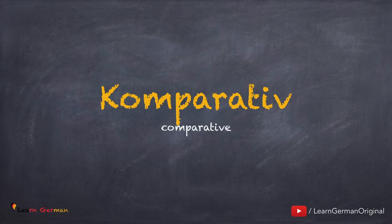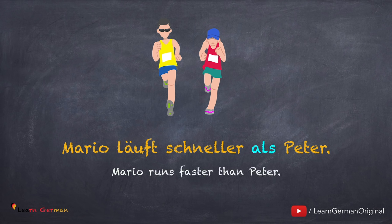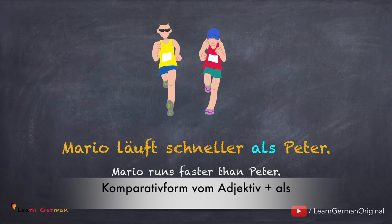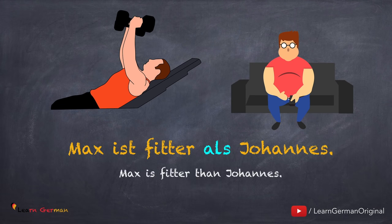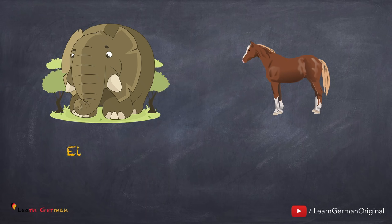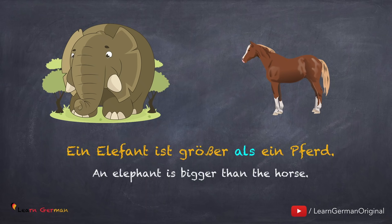Jetzt lernen wir, wie benutzt man Komparativ. Und hier ist das erste Beispiel: Mario läuft schneller als Peter. Wenn man zwei Sachen oder zwei Personen vergleicht, dann benutzt man die Komparativform von Adjektiv plus als. Hier ist noch ein Beispiel: Marx ist fitter als Johannes. So when you compare two people or two things, you use the adjective in the comparative form along with als. Ein Elefant ist größer als ein Pferd. Do remember to always use als with comparative forms.